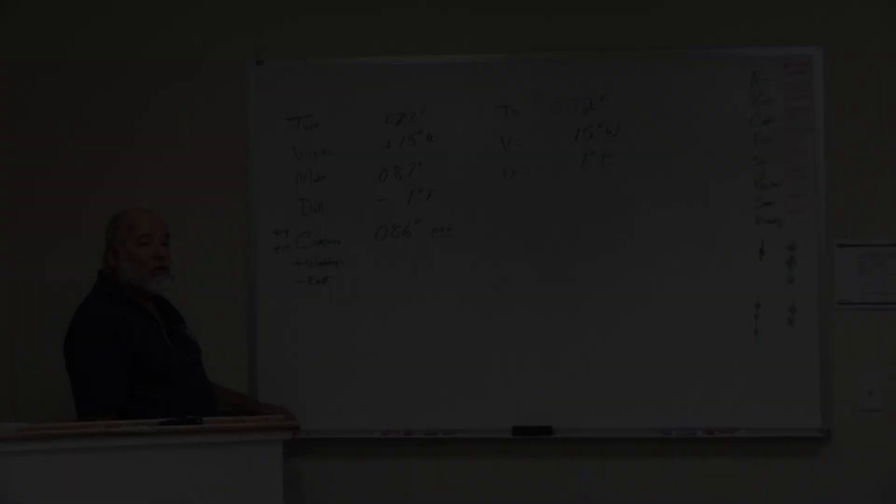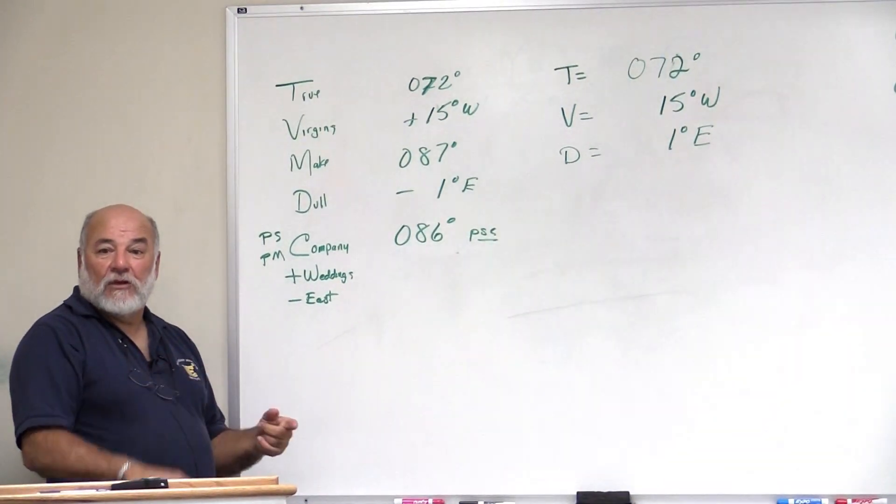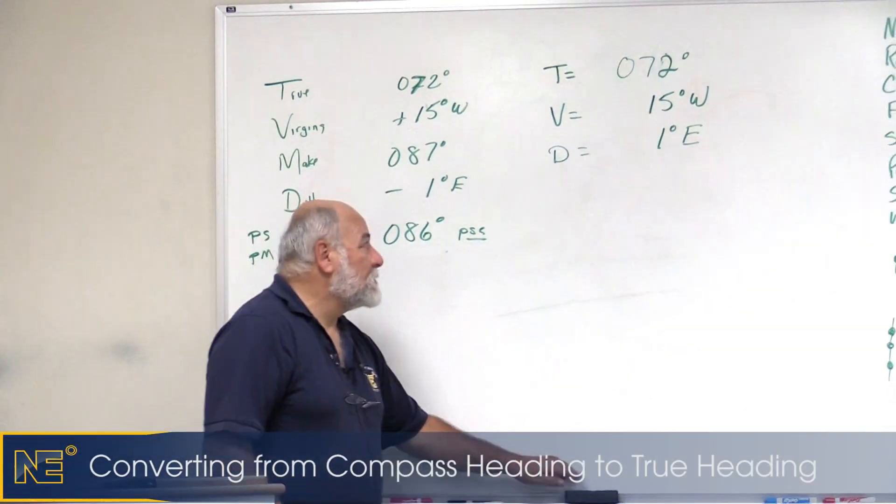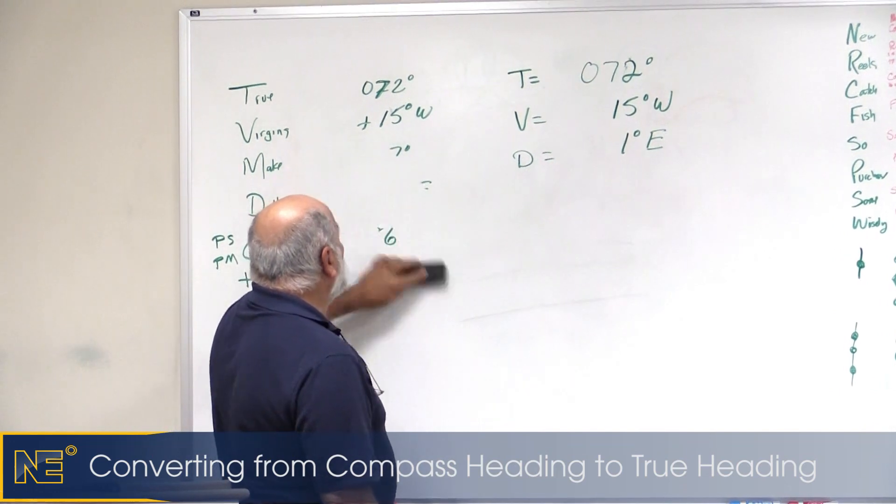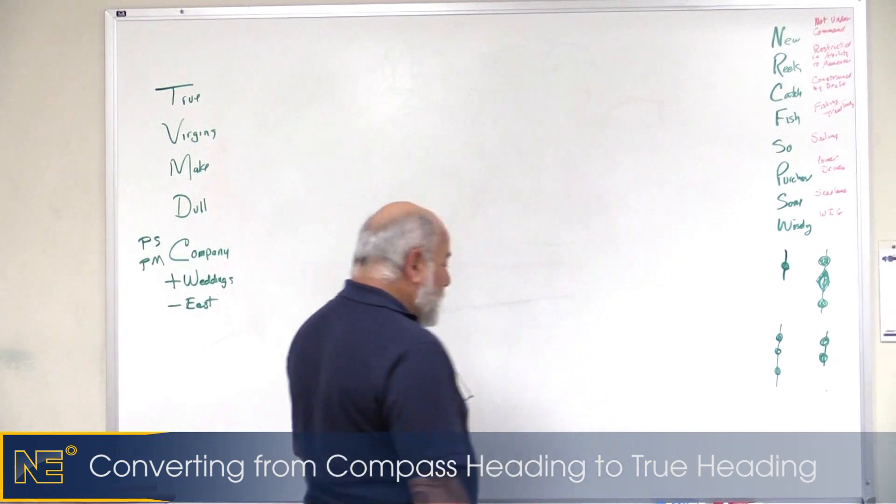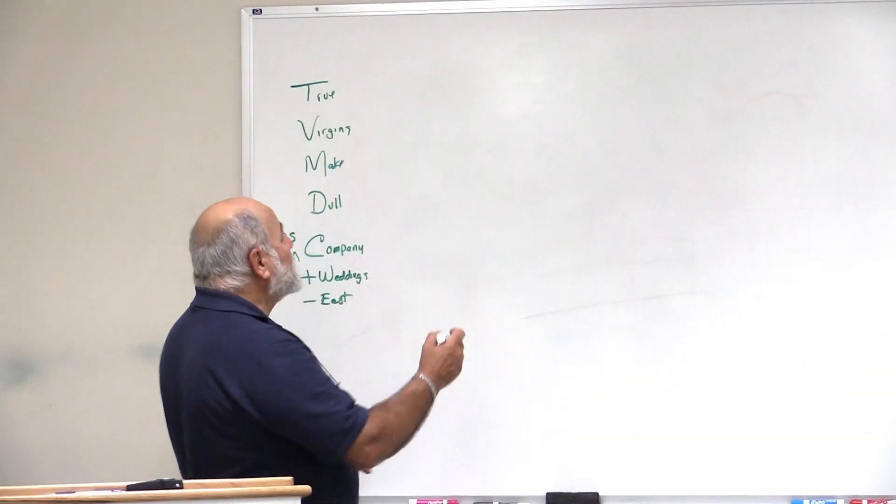Now we can do it the other way, we can go from compass to true. We're steering a course, and we want to know what course we would draw on our chart as the true course. Well, we have a little saying for that one too.